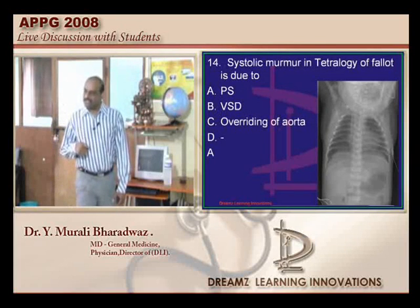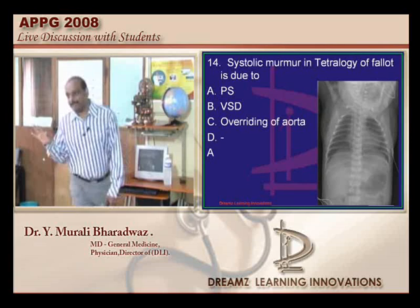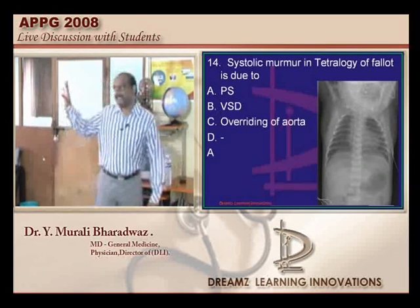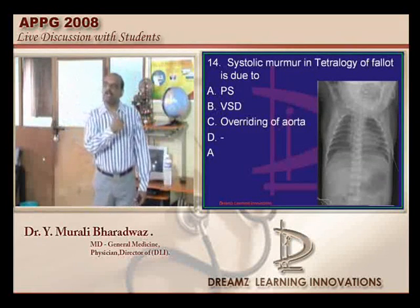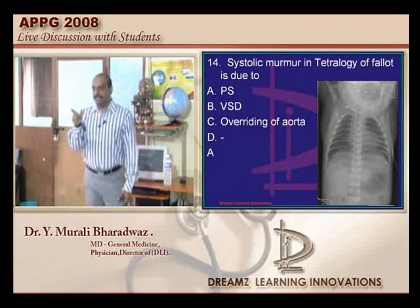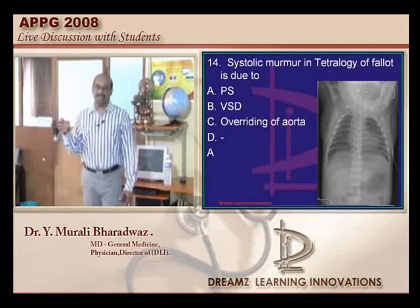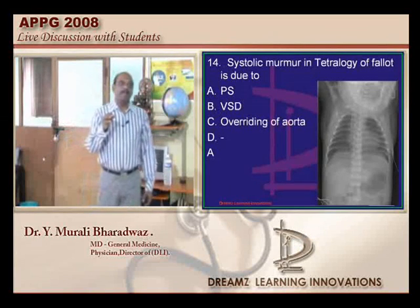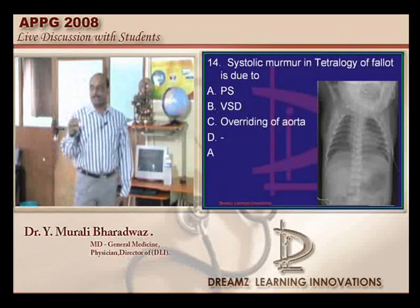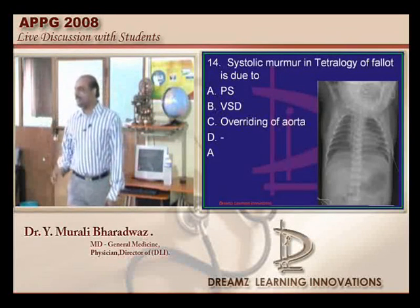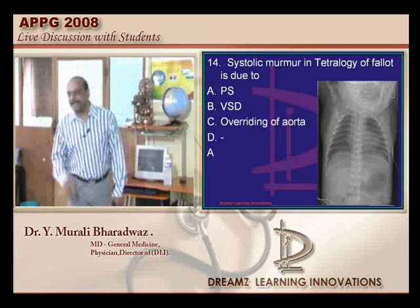You have one VSD, one PS. Both of them are capable of causing systolic murmur in isolation. And then you also have overriding aorta and RV hypertrophy. But the murmur that you listen — the systolic murmur — is due to the PS, not due to the VSD, which is of a more low-flow kind of situation.